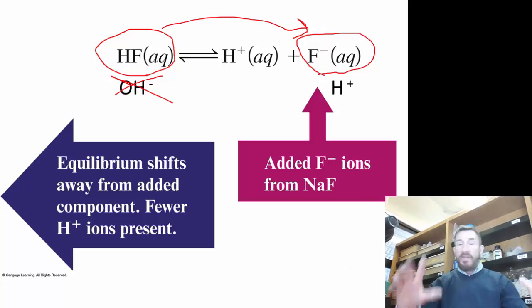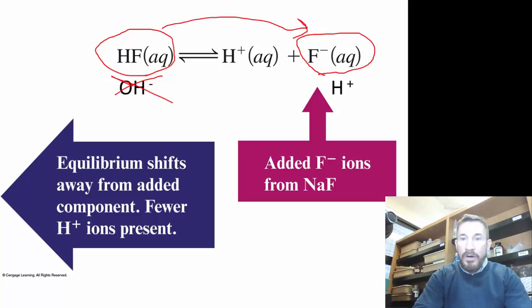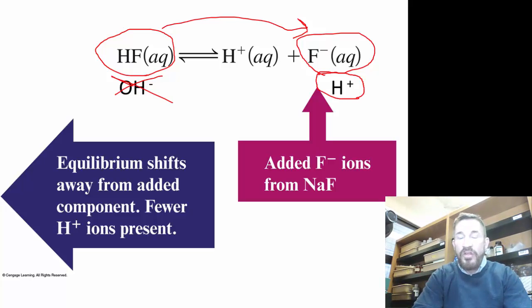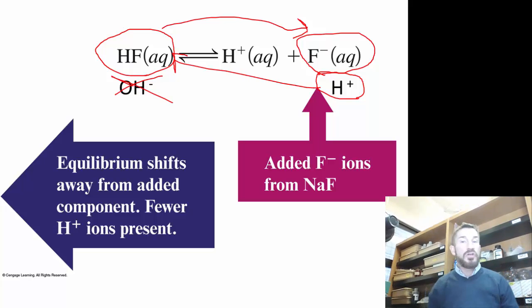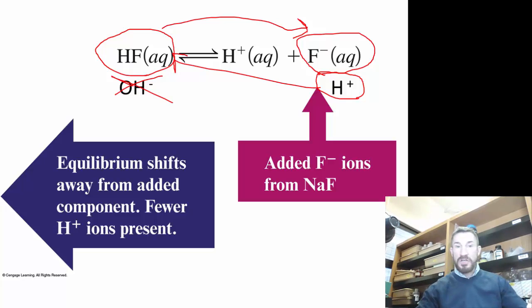If you add acid to it, which is adding tons of protons, what happens is that reacts with the fluoride ion and forms HF. So basically you've not changed the pH at all because you've absorbed either hydroxide or protons.